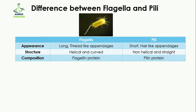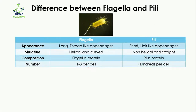If you talk about composition, flagella are made up of flagellin protein, while pili are made up of pilin protein. The number of flagella in one bacterial cell ranges from 1 to 8, while hundreds of pili are present in one bacterial cell.